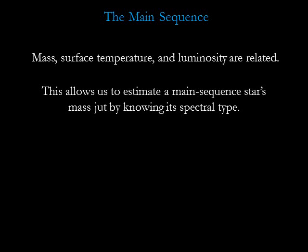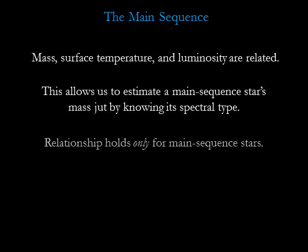For example, any hydrogen-fusing main sequence star that has the same spectral type as the sun must have about the same mass and luminosity as the sun. This relationship holds only for main sequence stars, not for giants, supergiants, or white dwarfs.